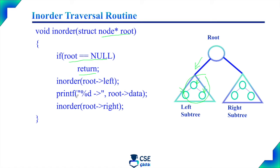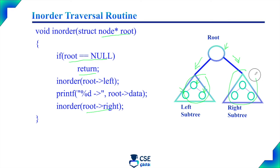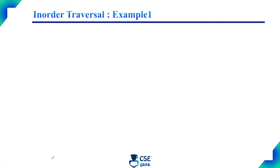Then print root data — we have to print the data in the root node. Next, inorder of root right: move to the right subtree and visit all the nodes in the right subtree as per inorder traversal — left child first, then root node, then right child. Next, we will see examples based on inorder traversal.